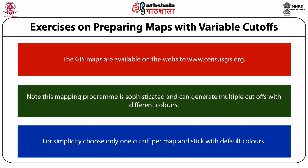So far fixed cut-off maps have been shown, but whatever cut-offs or region you take, you will find the same conclusions. Exercises are available where you can choose variable cut-offs on the website censusgis.org. You can pick a district or state of interest and look at the sub-state or sub-district areas of your choice, and you can do multiple cut-offs.